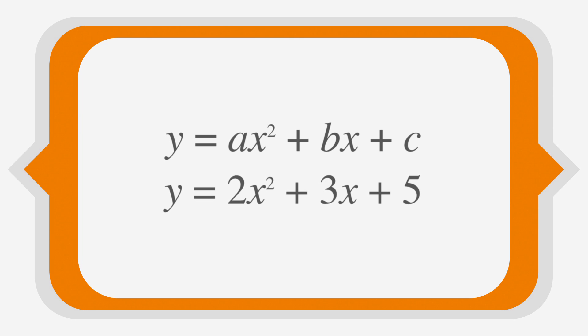For example, let's say the coefficient of x squared is 2, the coefficient of x is 3, and the constant term, the number that's by itself, is 5. A parabola is a quadratic equation, so the highest degree of x in the equation is x squared.